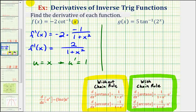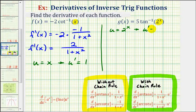Now looking at the second function, we have g of x equals five inverse tangent of two to the power of x, or five arc tangent of two to the power of x. Because the inner function is two raised to the power of x, we do have to apply the chain rule in order to find this derivative, so we'll be using this derivative formula here. The inner function is equal to u, so in this case we would have u equals two raised to the power of x, which means u prime, the derivative of u with respect to x, would be natural log two times two to the power of x.